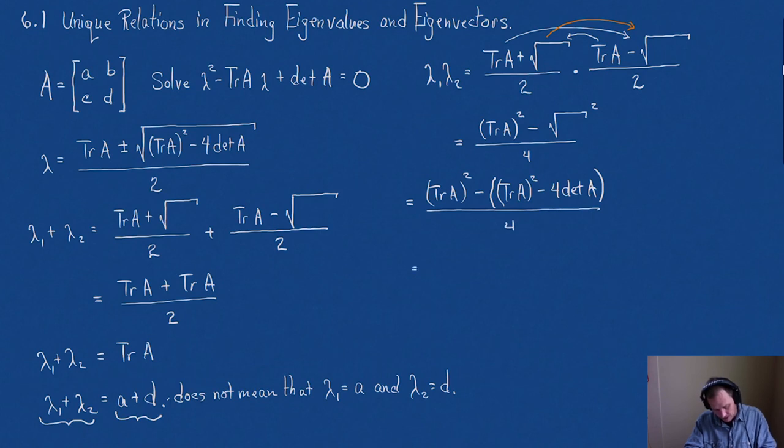Wait, but that is, the trace of A squared is canceled. So, now I'm left with 4 times the determinant of A over 4, and there it is. In other words, what have we found? We have found that lambda 1 times lambda 2 is equal to the determinant of A.